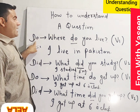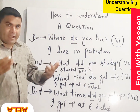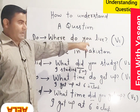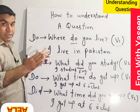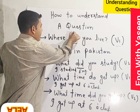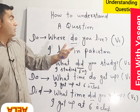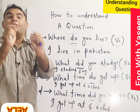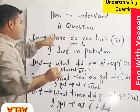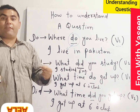When the question is asked with 'do,' you have to answer with the first form of the verb. For example, 'Where do you live?' — because 'do' has been used, you answer with the first form of verb: 'I live in Pakistan.'